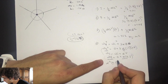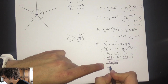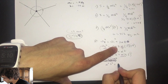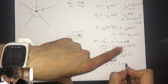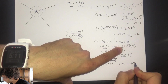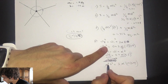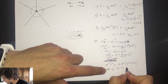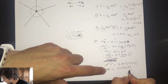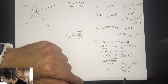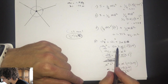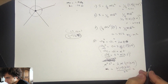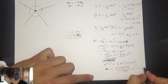Substituting and simplifying: (alpha × t)² = 2 × alpha × 17 × 2π. Canceling one alpha, we get: angular acceleration equals 2 × 17 × 2π divided by t squared. Plugging in t = 3.5, the angular acceleration comes out to 17.43 radians per second squared.